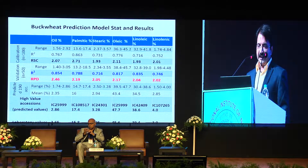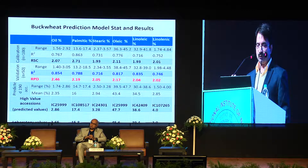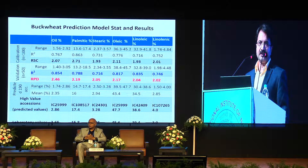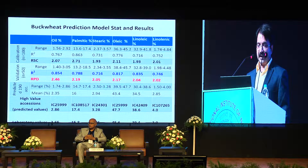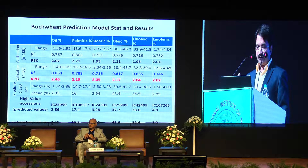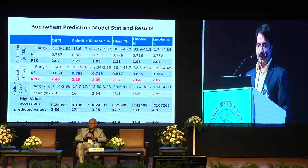For buckwheat, all RPD values are more than 2 and R² values are more than 0.8 except for stearic acid which is 0.7. For palmitic acid where R² is 0.78, the deviation is a bit more — predicted value 17.4 versus laboratory value 15.8. However, for stearic acid, predicted value is 3.28 versus laboratory value 3.25, showing very high accuracy.